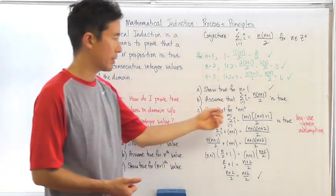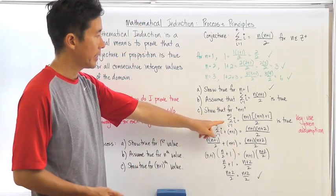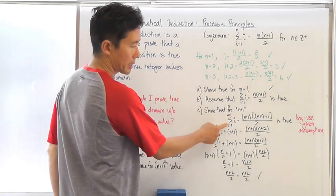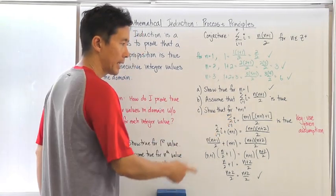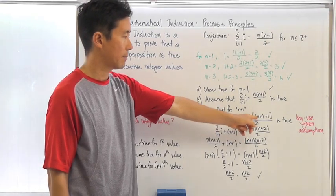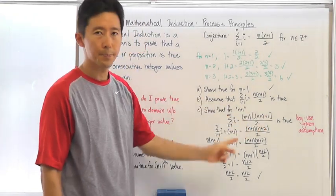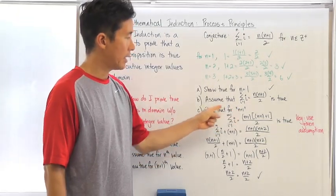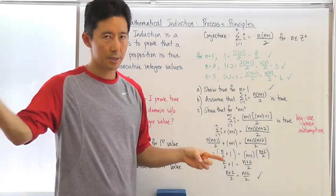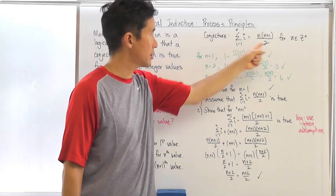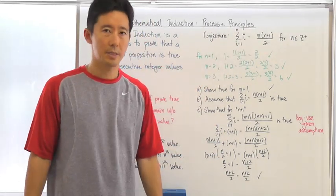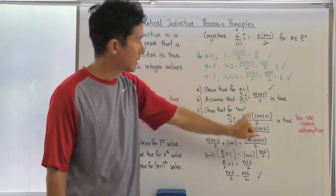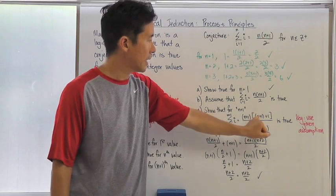Then I need to show that for n plus 1, inserting n plus 1 into my conjecture, the summation from i equals 1 to n plus 1 of i is going to equal n plus 1 times (n plus 1 plus 1) divided by 2. Wherever in my conjecture there was an n, I'm inserting n plus 1 instead. Notice that this becomes n plus 1, and again n plus 1, and again n plus 1.